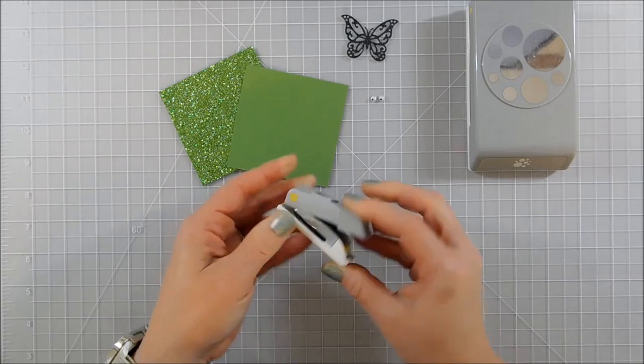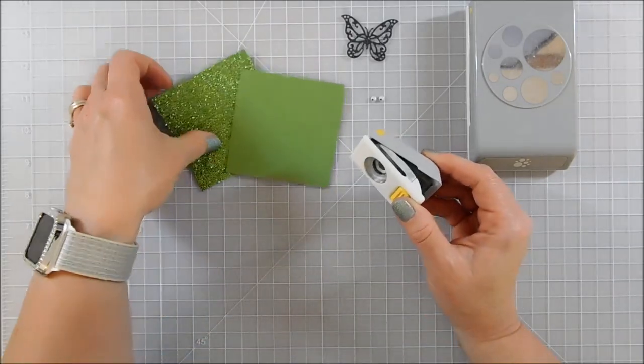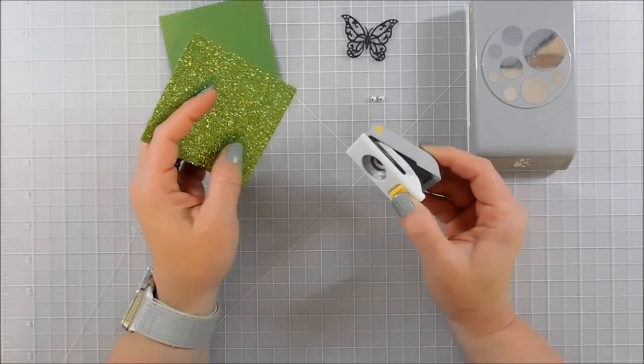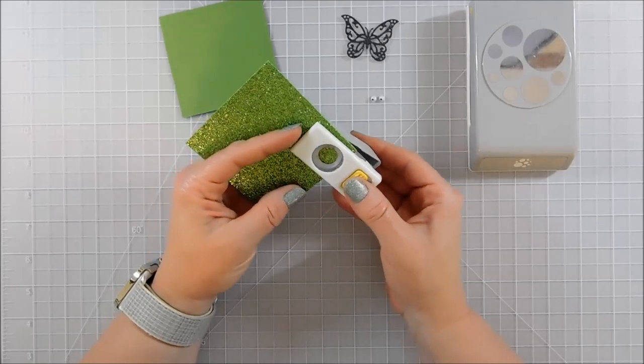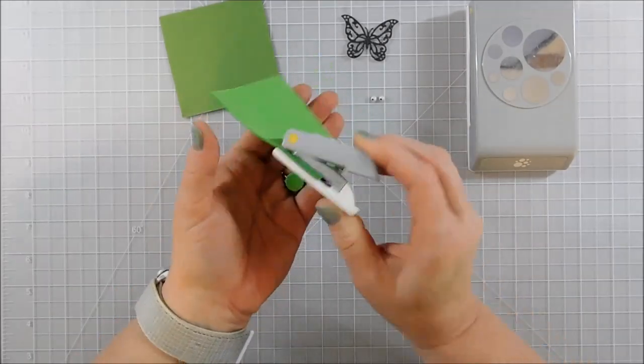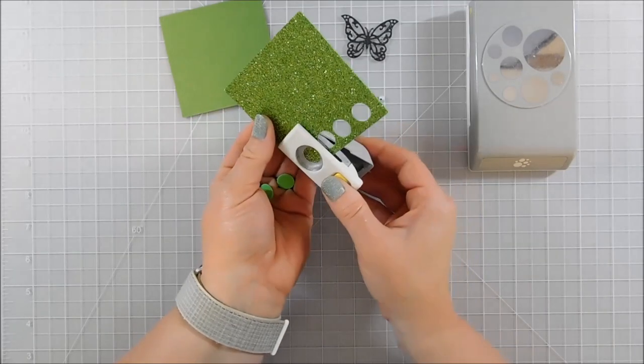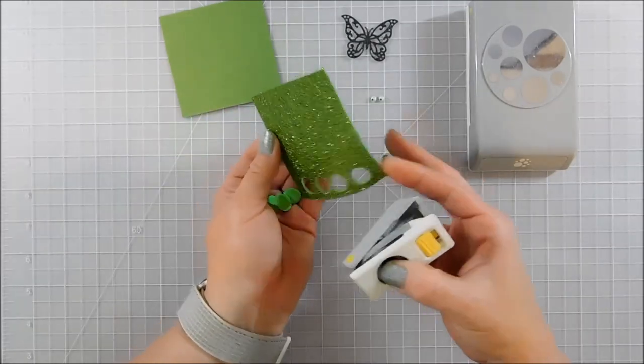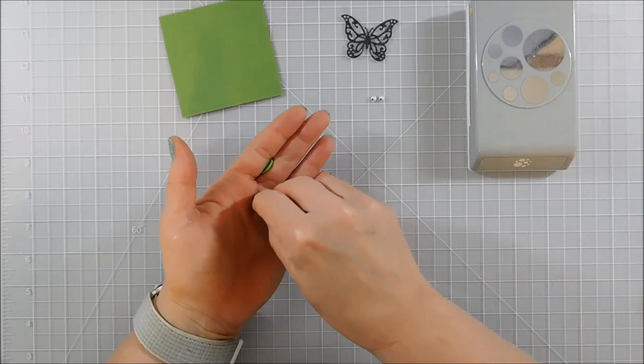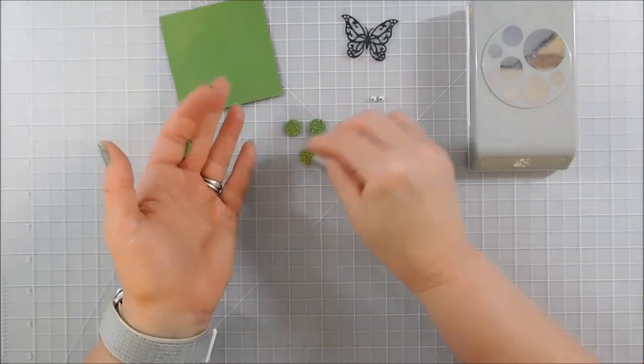So for the body segments I'm going to use my half inch circle and I want seven of those. I'm going to do four in the glitter and three in the solid cardstock.